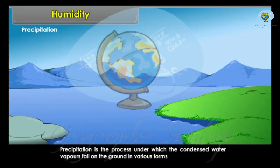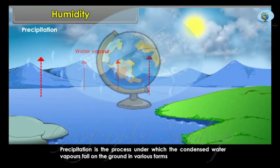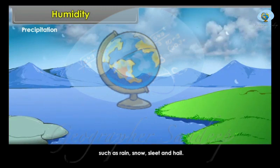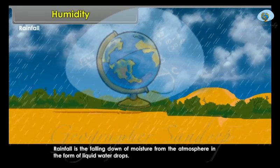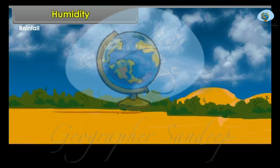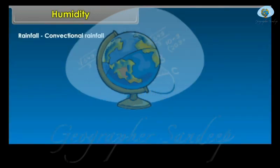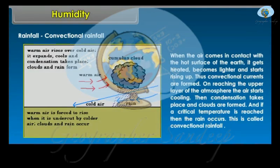Precipitation is the process under which the condensed water vapours fall on the ground in various forms such as rain, snow, sleet and hail. Rainfall is the falling down of moisture from the atmosphere in the form of liquid water drops. Rainfall is of three types: convectional rainfall, relief rainfall, and cyclonic rainfall. Convectional Rainfall: When the air comes in contact with the hot surface of the earth, it gets heated, becomes lighter and starts rising up. Thus convectional currents are formed. On reaching the upper layer of the atmosphere, the air starts cooling, condensation takes place, clouds are formed, and if a critical temperature is reached, rain occurs — this is called convectional rainfall.